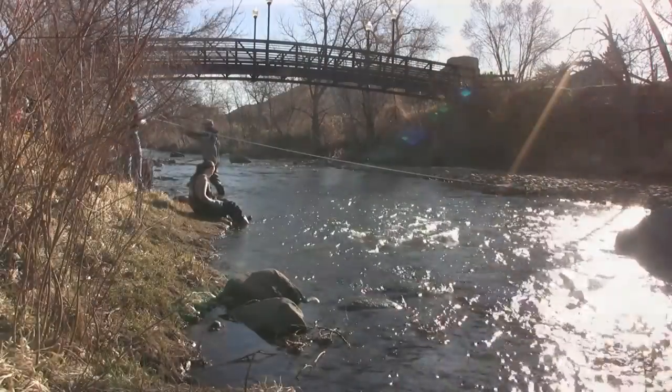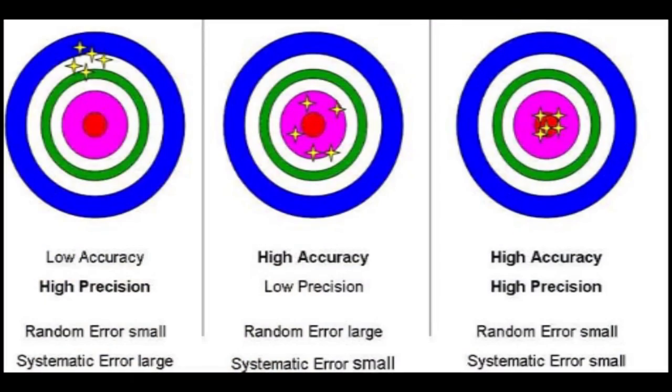As you collect each datum, keep in mind what types of errors might occur. Once possible errors are identified, they can often be controlled to optimize precision and accuracy. At the very least, possible errors should be noted in your field notes.